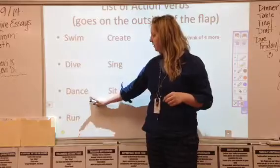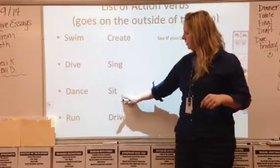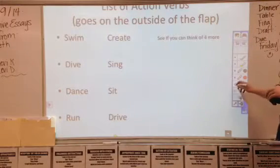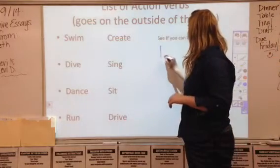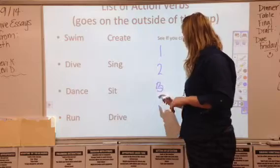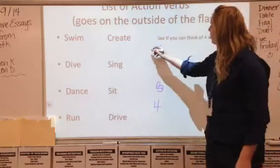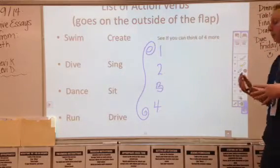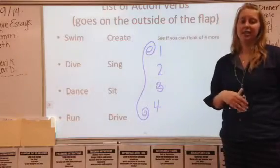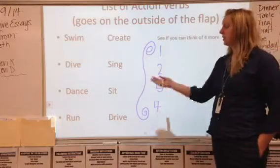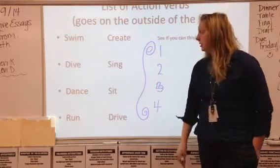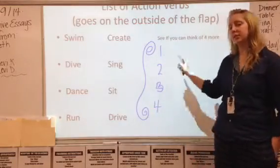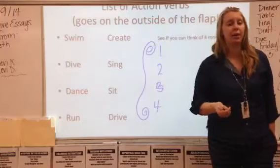We have: swim, dive, dance, run, create, sing, sit, and drive. Go ahead, pause the video if you need to, to get those down. Once you have those down, see if you can think of four more. Put those on the outside of your flap as well — just to help you remember what action verbs are. Don't overthink it, it's really simple things, like singing and sitting. You can be driving, dancing, whatever you do on a daily basis — walk, drive, whatever. So just get four more down on the outside of that flap. Go ahead, pause the video and do so.